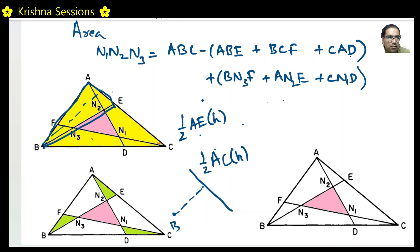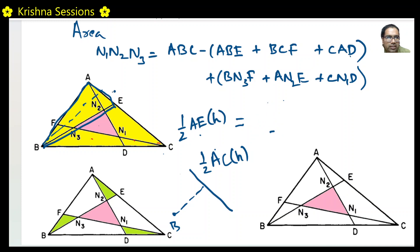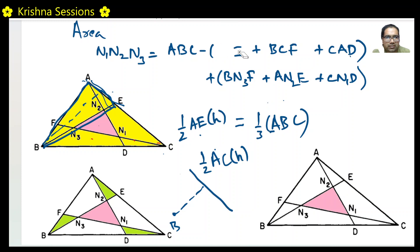We know AE/AC = 1/3, which is already given. So area of ABE = ½ × (1/3)AC × H = (1/3) × ½ × AC × H = (1/3) × Area(ABC). Therefore area of ABE = ABC/3.